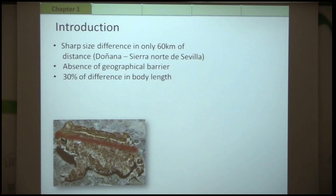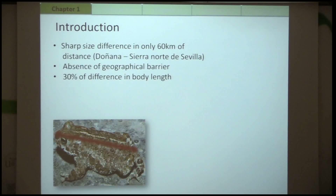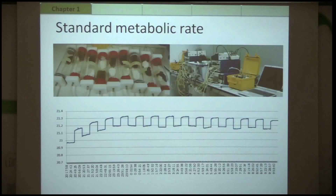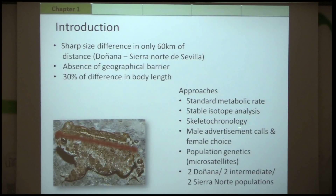There is a sharp cline of size in the populations of Doñana and the Sierra Norte de Sevilla in the natterjack toad in the absence of an efficient geographic barrier, with a difference in body length of up to 30%. To understand the diverse array of ecological factors driving this phenomenon, I am employing standard metabolic rate analysis, stable isotope analysis, skeletal chronology, male advertisement calls, female behavioural assays, and population genetics. I have two dwarf populations, two intermediate populations, and two populations from the Sierra Norte de Sevilla.